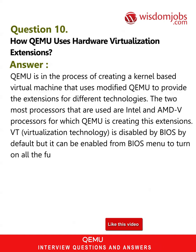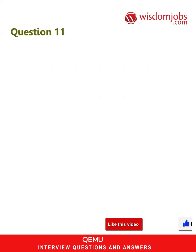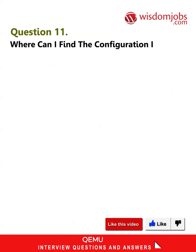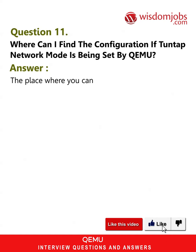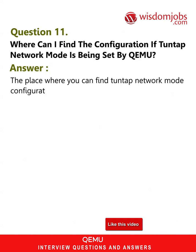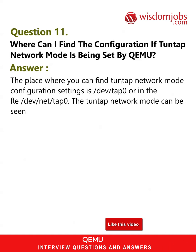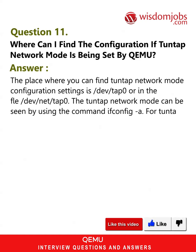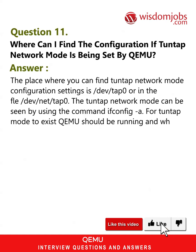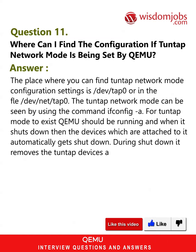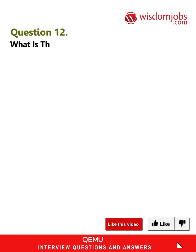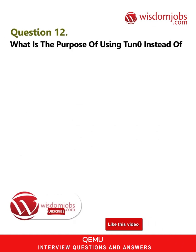Question 11: Where can I find the configuration if TUN/TAP network mode is being set by QEMU? Answer: The place where you can find TUN/TAP network mode configuration settings is /dev/tap0 or in the file /dev/net/tap0. The TUN/TAP network mode can be seen by using the command ifconfig -a. For TUN/TAP mode to exist, QEMU should be running, and when it shuts down, the devices attached to it automatically get shut down. During shutdown, it removes the TUN/TAP devices as well.